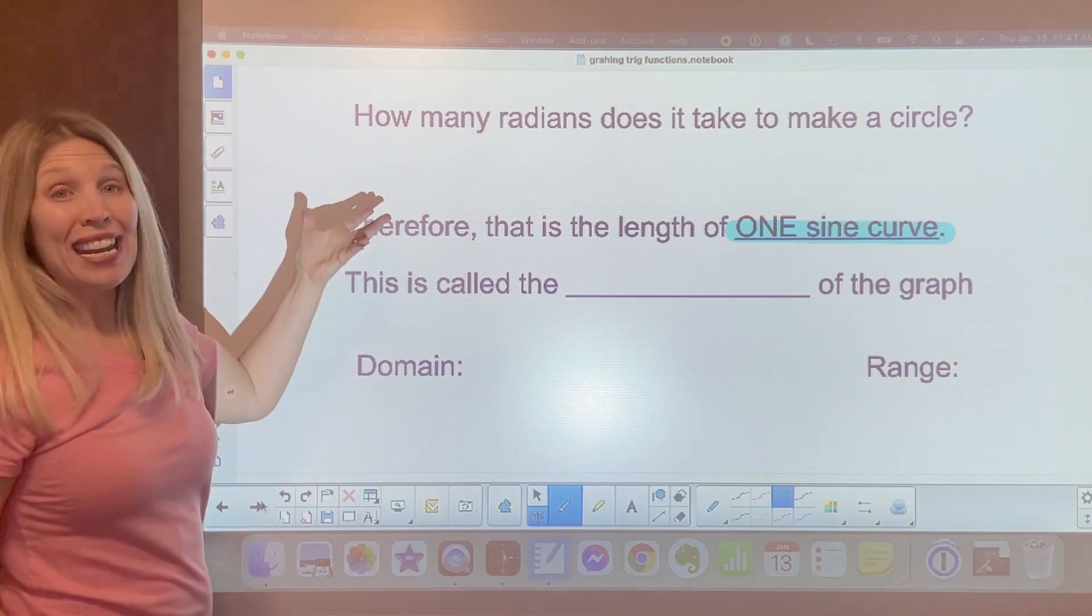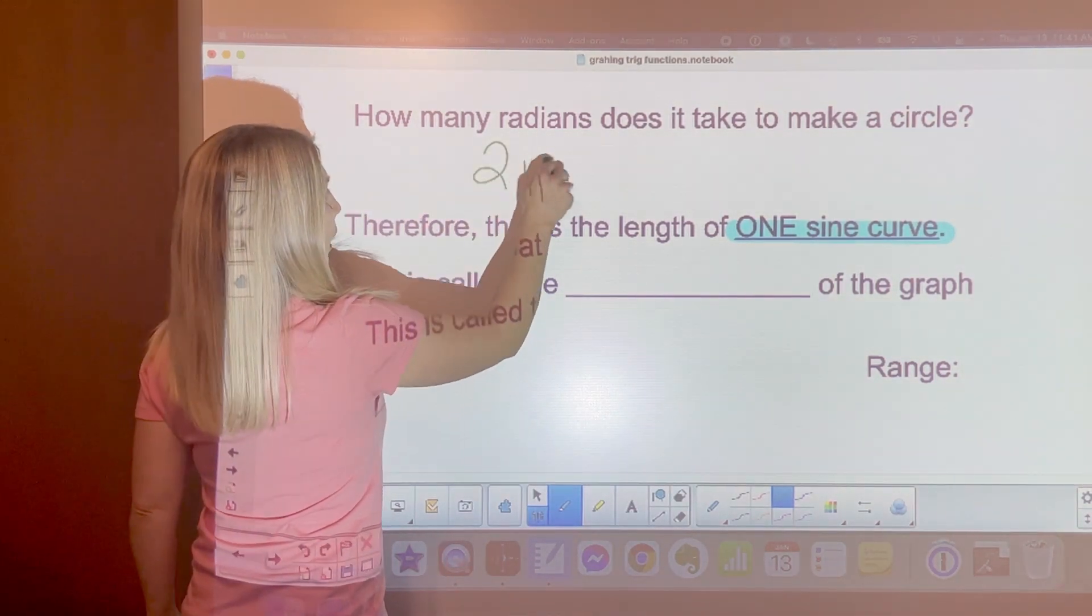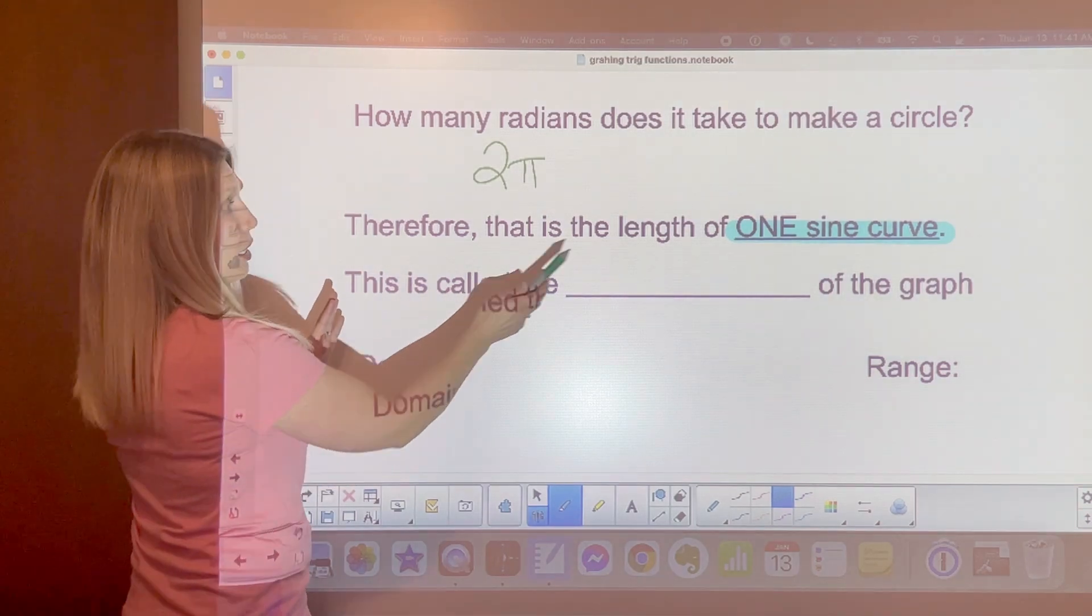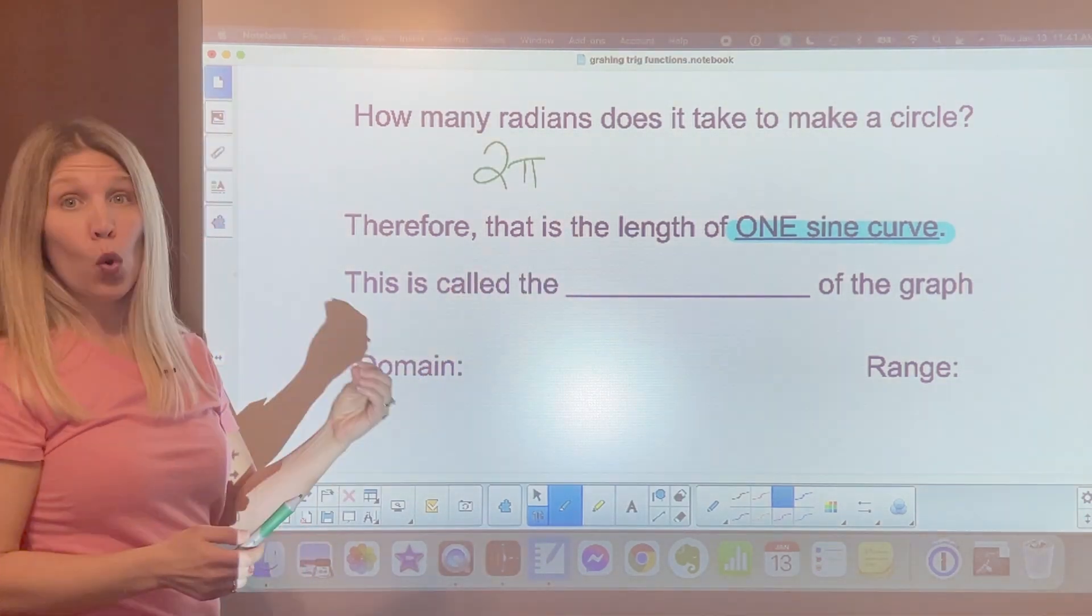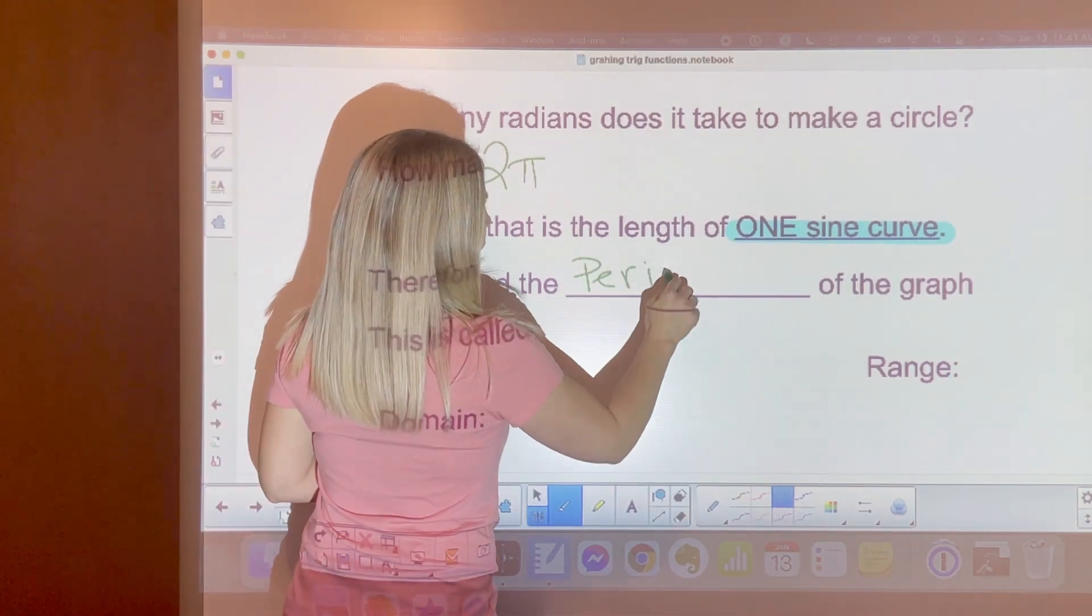But what we talk about is one revolution of the circle. How many radians does it take to go around the circle? It goes around 2 pi, right?